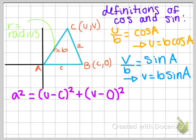And then same thing with sine. Sine is the y value, and then you cross multiply, and you get v equals b sine A. And because we have a new value for v and u, we're able to plug those, like what they're equal to, into the equation.